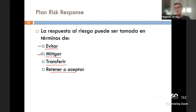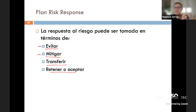Cuatro tipos: evitar, mitigar, transferir o retener. En ciberseguridad tiene que ver con salvaguardas y objetivos de control. Yo puedo decidir que para un evento lo evito, o lo tolero y es el riesgo que se venga y voy a mitigar.